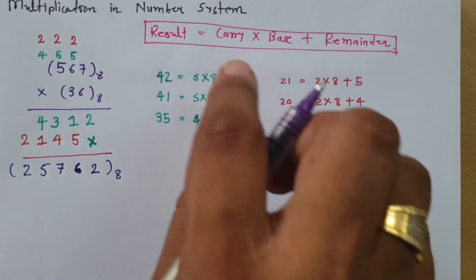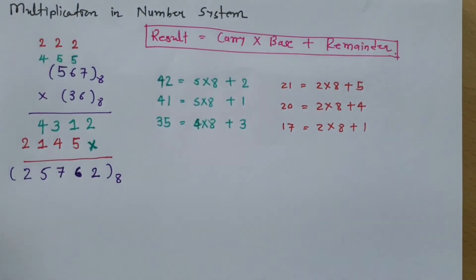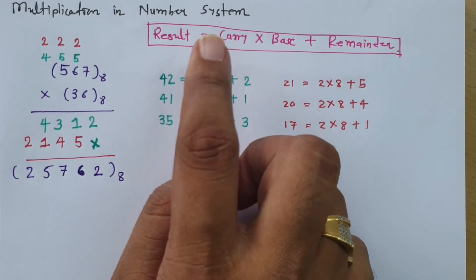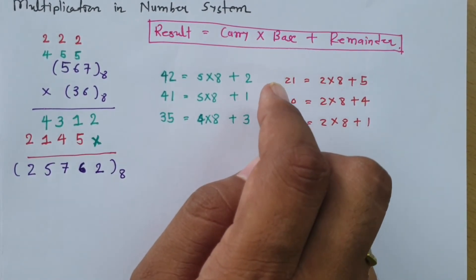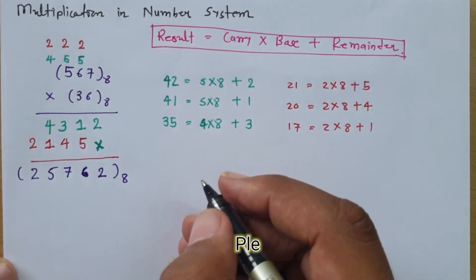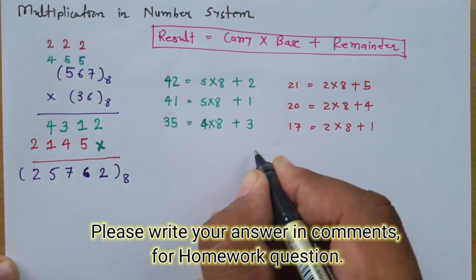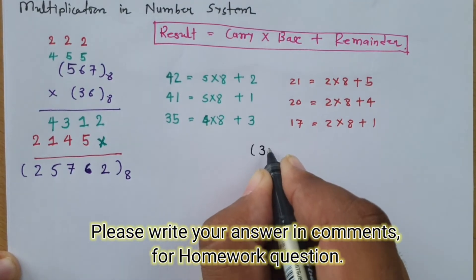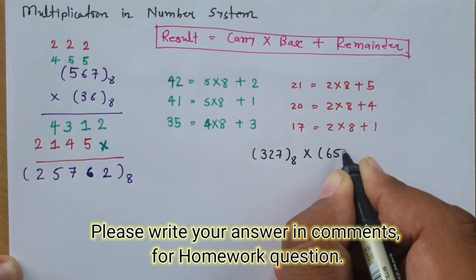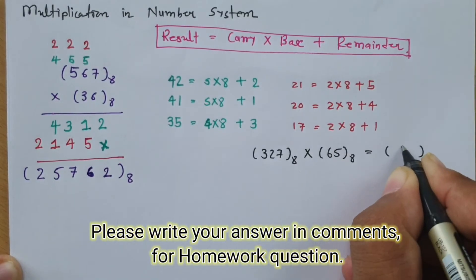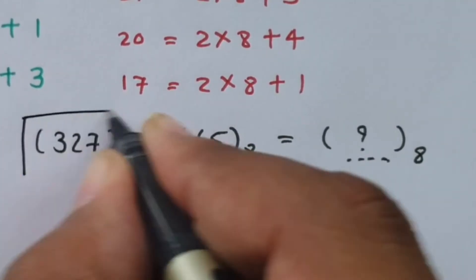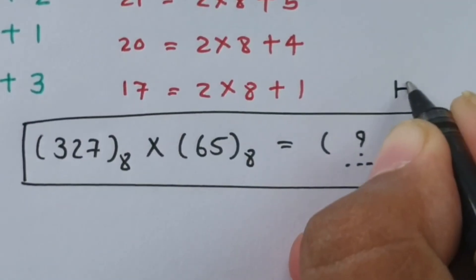We need to understand this formula and apply it properly. You cannot directly place the multiplication result — you must apply the carry-remainder formula. In addition, the same formula applies as used in my previous video. Now for self-study, I am giving you a problem: multiply 327 in octal by 65 in octal. Write your answer in the comments and I will get back to you if any mistakes are there.